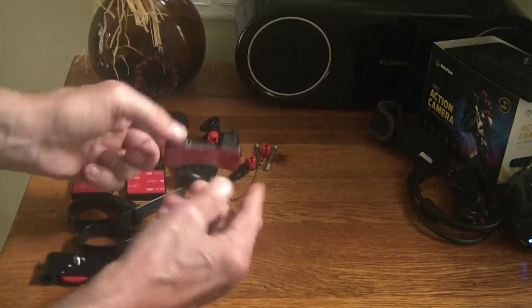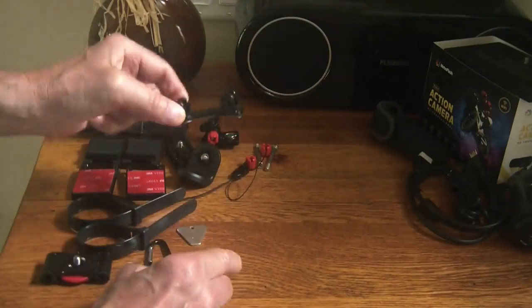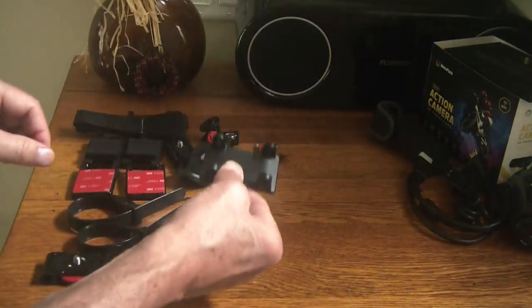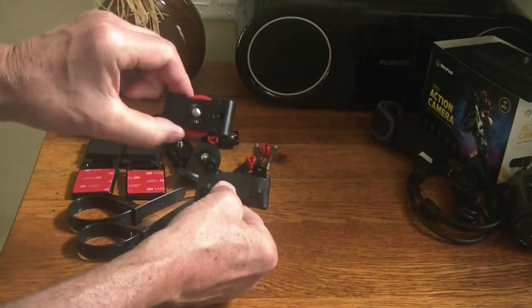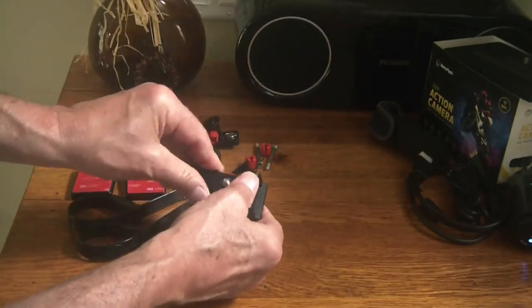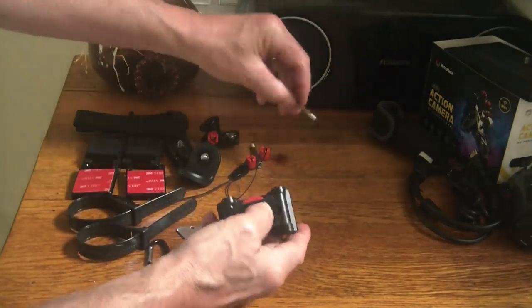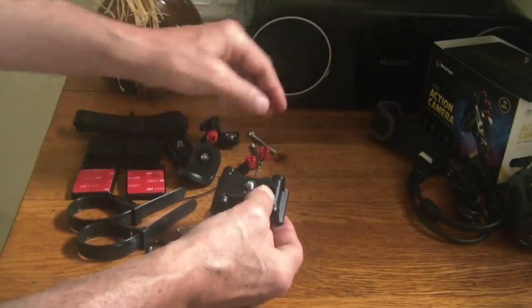But you do get a helmet mount that has a curved surface with 3M sticky on it and basically this gets attached to the helmet. This piece here gets attached to the camera and the helmet mount and then you use these bolts to tighten everything up.